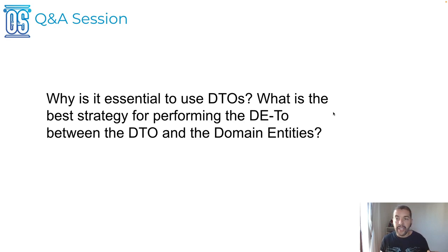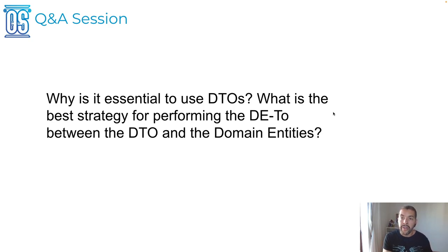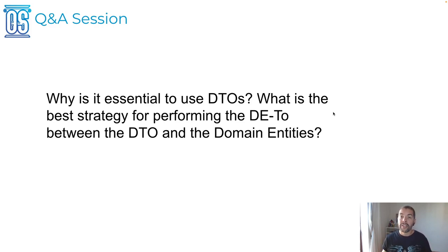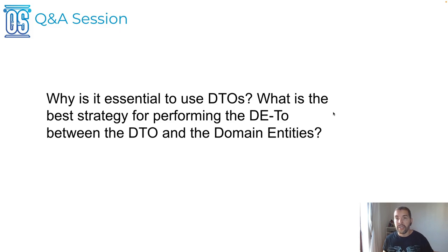Why is it essential to use DTO, or Data Transfer Object? The first reason is isolation between your entity and anything else. For example, imagine that I have a user entity that has several critical pieces of information such as passwords or any credential that you don't want to expose. What you can do is use a DTO to explicitly define what you can expose on that API. Of course, you can use annotations to ignore fields on the serialization.